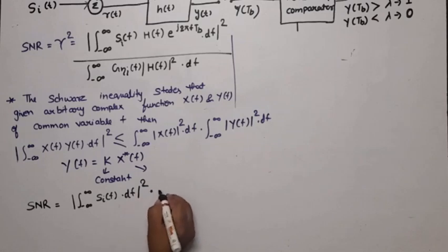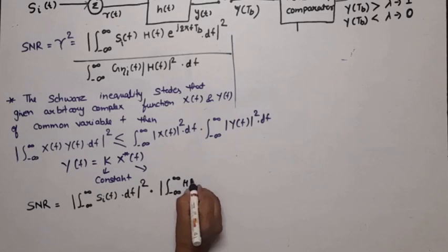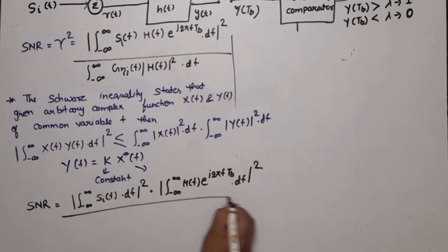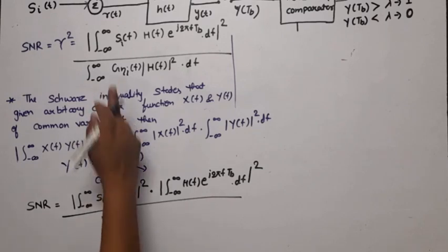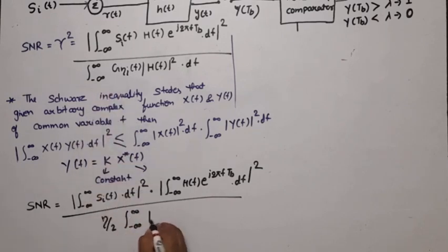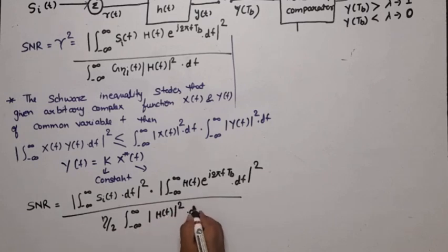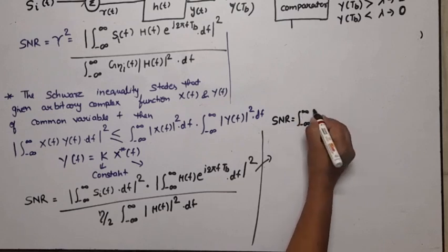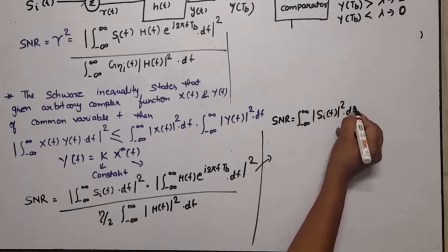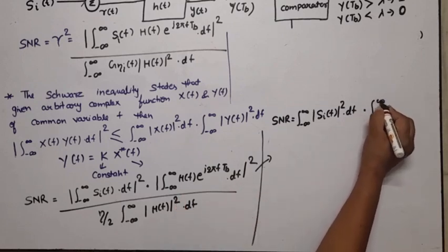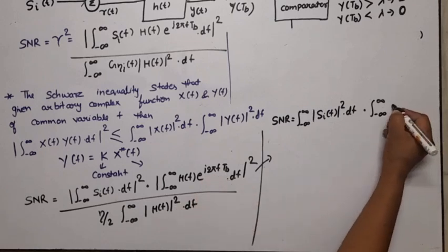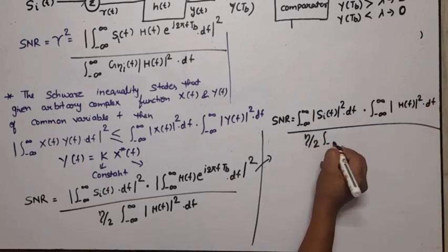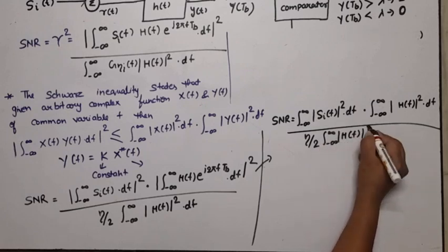Since |e^(j2πfT_b)| = 1, the term |H(f) · e^(j2πfT_b)|² = |H(f)|². So SNR ≤ [ integral of |S_i(f)|² df · integral of |H(f)|² df ] divided by [ (η/2) · integral of |H(f)|² df ]. The integral of |H(f)|² df cancels, giving SNR ≤ (2/η) · integral from −∞ to ∞ of |S_i(f)|² df.